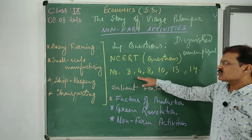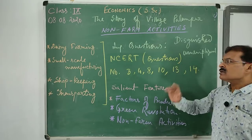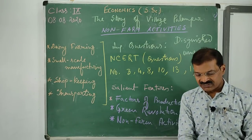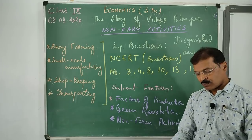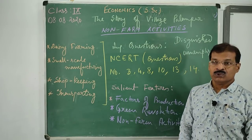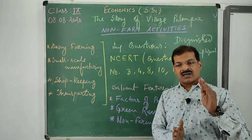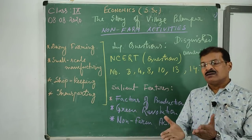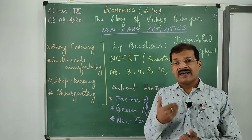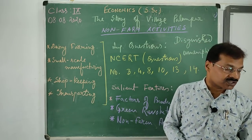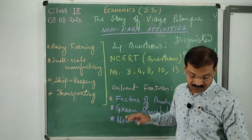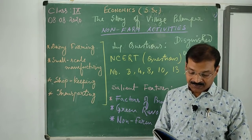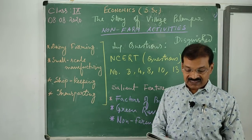Now we have to pay attention to all the NCERT questions, but specifically question numbers 3, 4, 8, 10, 13, and 14. Question number 3: how did the spread of electricity help farmers in Palampur? In Palampur, there were Persian wells, but when electricity came, production grew very fast and rapidly. This is the help of electricity.